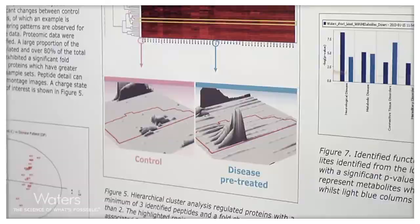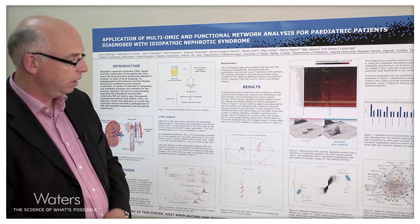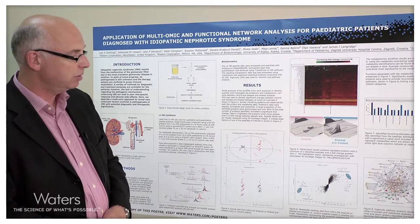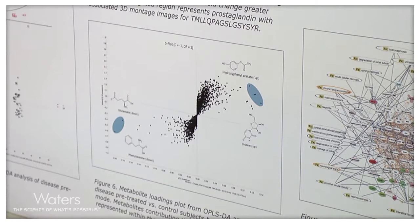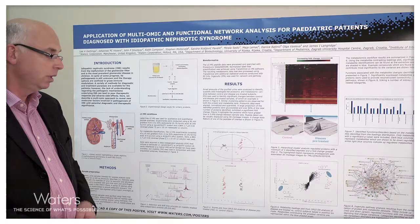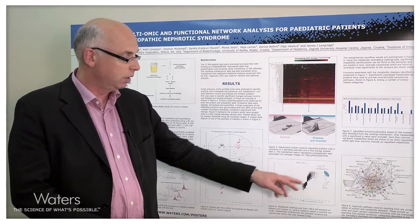At the metabolite level, Figure 6 shows the typical S-plot used in metabolomics analysis, which identifies features that differentiate one sample set from the other. These differentiating features are highlighted in blue. We can see features going down in the disease patients, such as phenylalanine and glutamate, and those which are upregulated in disease patients — in this case, uridine.